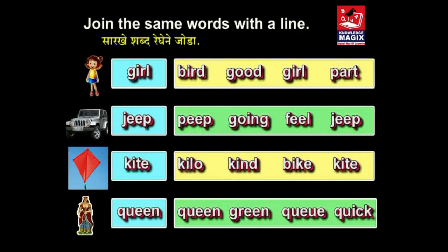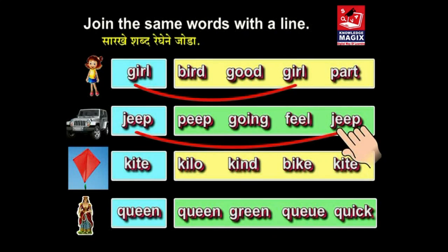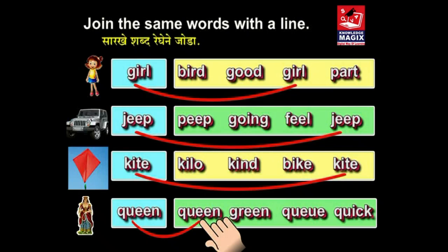Now join the same words with a line. So which is this word? Girl. This is Jeep. This is Kite. This is Queen.